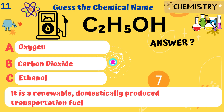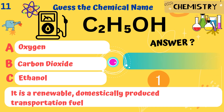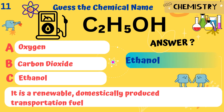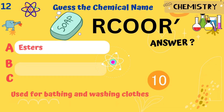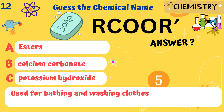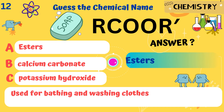C2H5OH. It is a renewable, domestically produced transportation fuel known as biomass. Answer: Ethanol. RCOOR. It is used for bathing and washing clothes. Answer: Esters.